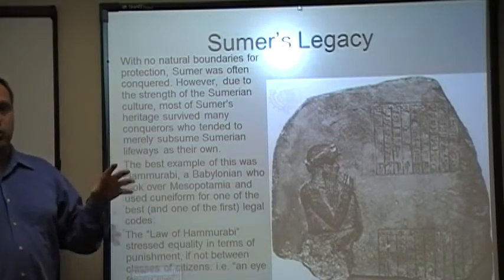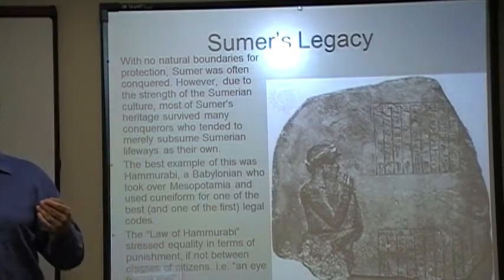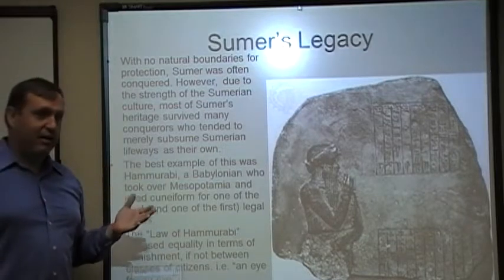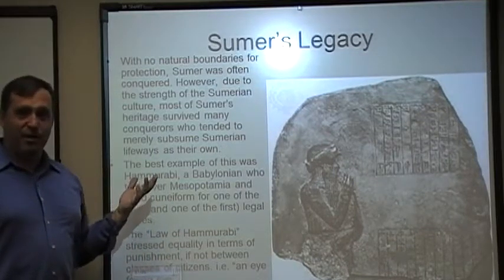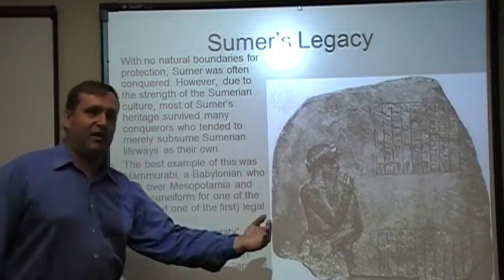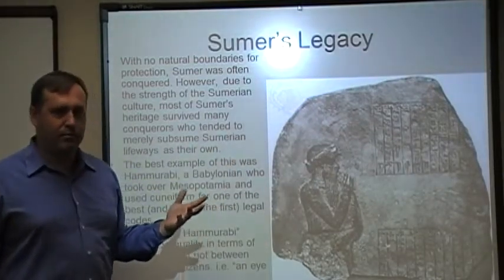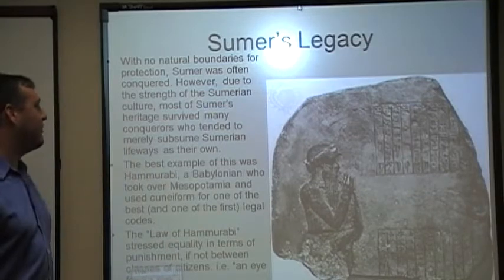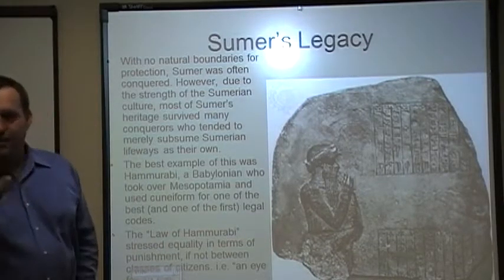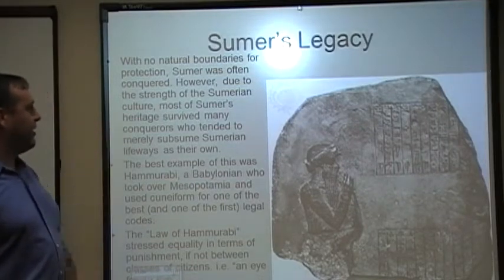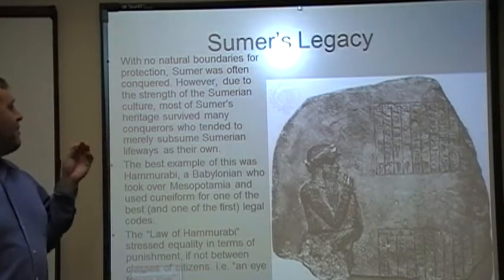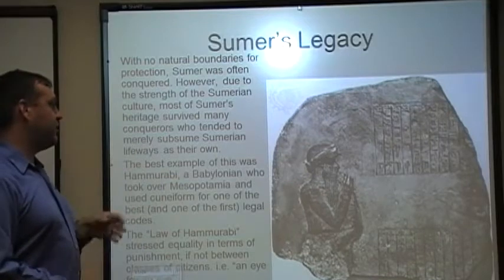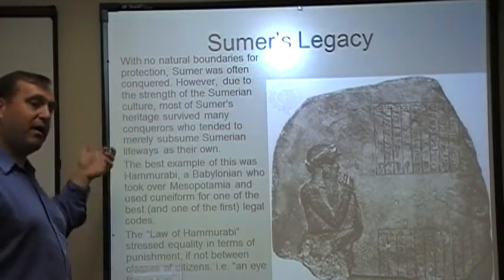One of the things we'll talk about a lot in World History 1 is conquerors — how they conquer, and then what do you do next? It turns out that conquest is actually pretty easy. You get a big army, especially with a good commander, they can take over a lot of places. But unless you kill everybody, you're going to have to adapt — you've taken these people over, now what do you do with them? In a lot of ways, Sumer often conquers its conquerors — not militarily, but culturally. A lot of Sumer's cultural heritage survives because many of these people that come into Sumer realize it's really got a lot of stuff figured out, and they adapt themselves to Sumerian culture, subsuming these Sumerian lifeways as their own.